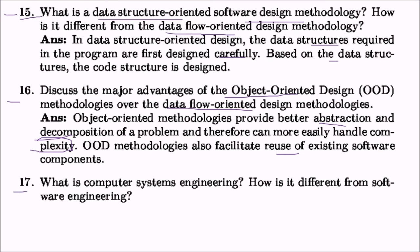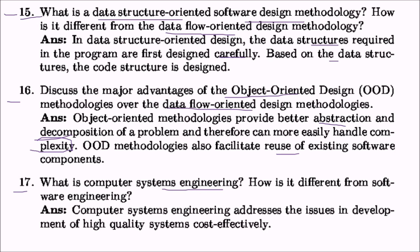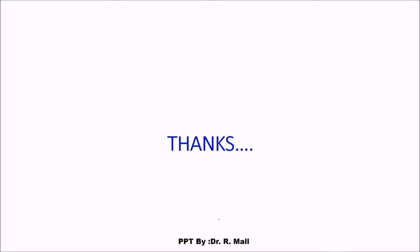Question seventeen asks what computer systems engineering is and how it differs from software engineering. People often confuse software engineering with computer systems engineering. Computer systems engineering addresses issues in the development of high quality systems cost effectively, and this was the first chapter — Introduction — questions and answers from Dr. Rajiv Mahal's book on Software Engineering. Thank you so much, take care.